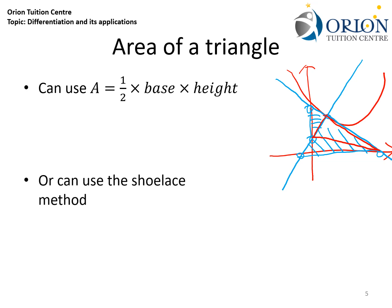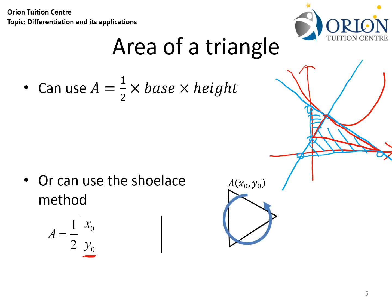In such cases, we will make use of the shoelace method to find the area of the triangle. To use the shoelace method, write one half times a big pair of modulus brackets. Pick a random vertex A with coordinates (x₀, y₀) and write these as the first column. Move anticlockwise to point B with coordinates (x₁, y₁) as the second column, then to point C with (x₂, y₂) as the third column. Finally, repeat the coordinates of point A again as the final column.